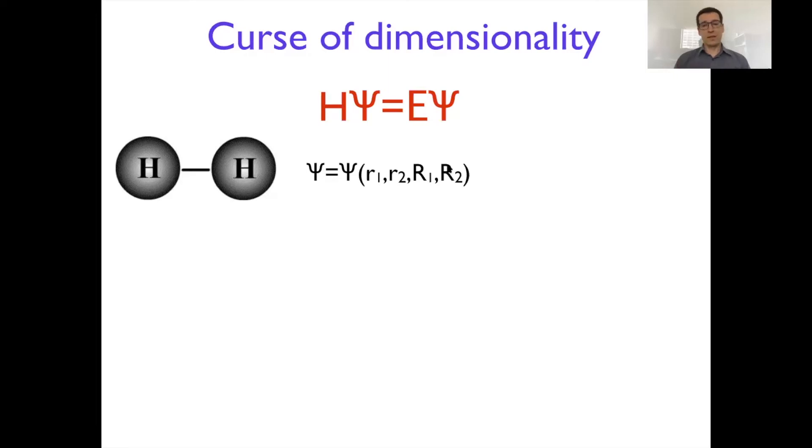This is just a result of dimensionality. To appreciate that, let's consider a simple example of hydrogen molecule. In case of hydrogen molecule, we have two electrons and two nuclei. So four variables, but all of them live in a three-dimensional space. We ignore spin for now, which is another complication.